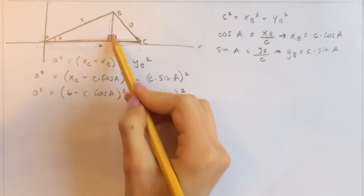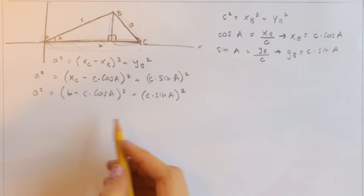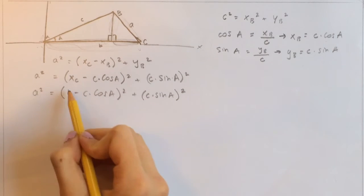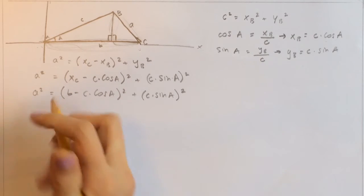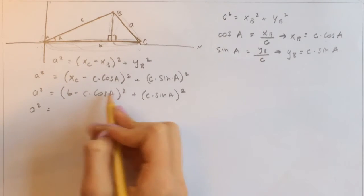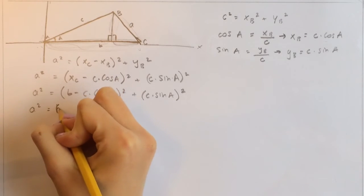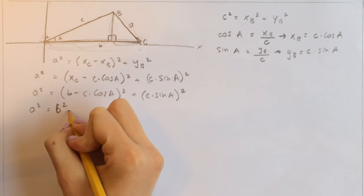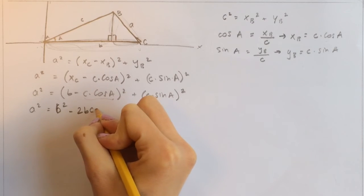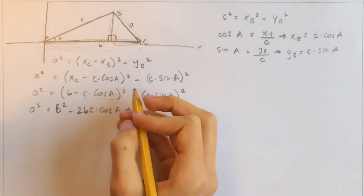Now we're going a little further. Since you know that (A minus B) squared equals A squared minus 2AB plus B squared, let's expand. So this becomes b squared minus 2b times c times cosine of A, plus c times cosine of A squared.